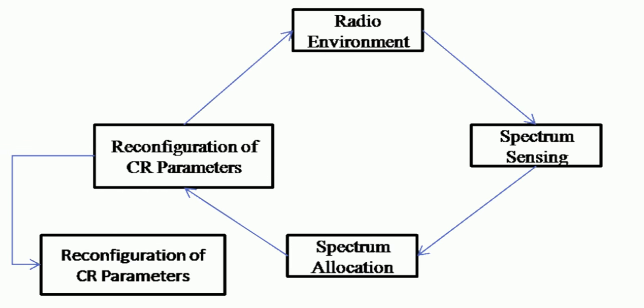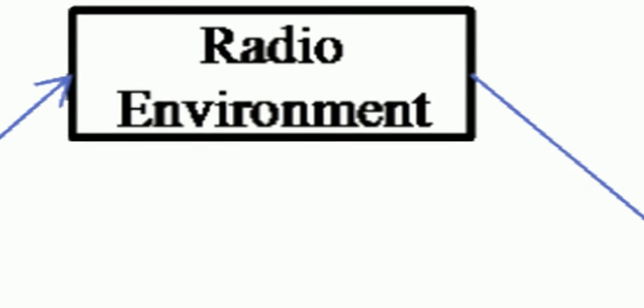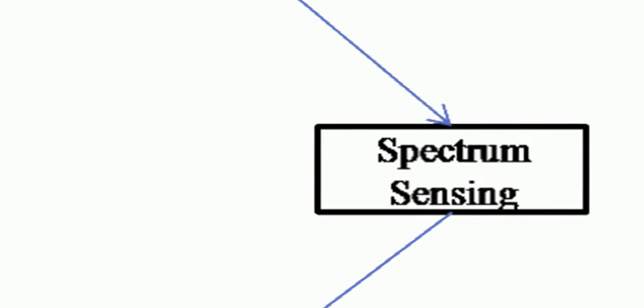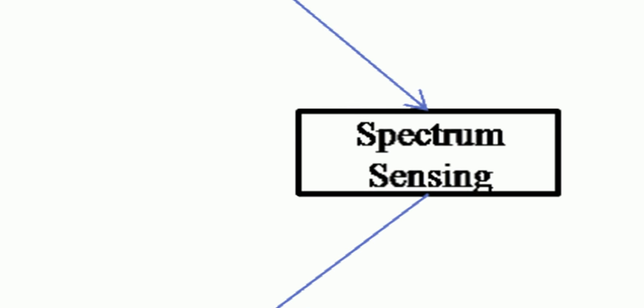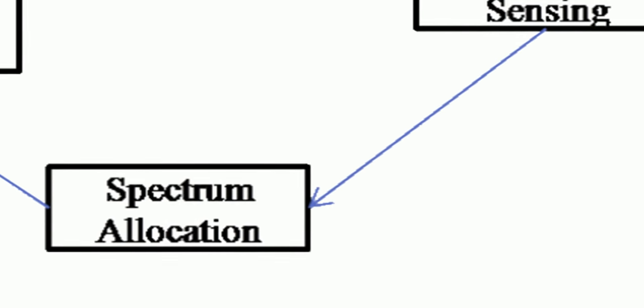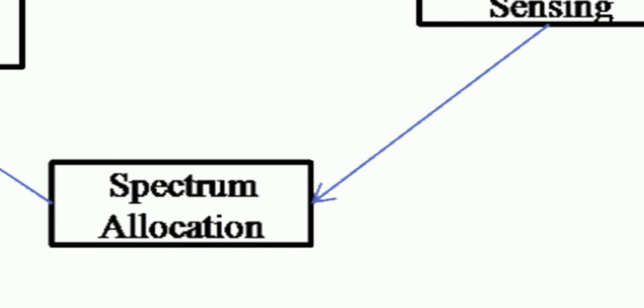A cognitive radio in simple words has this particular block diagram where it has a transmission and reception unit that forms the radio environment. The spectrum sensing whereby a sensing layer of the cognitive radio nodes tries to find out which spectrums are free and which are occupied, followed by a spectrum allocation or reallocation.